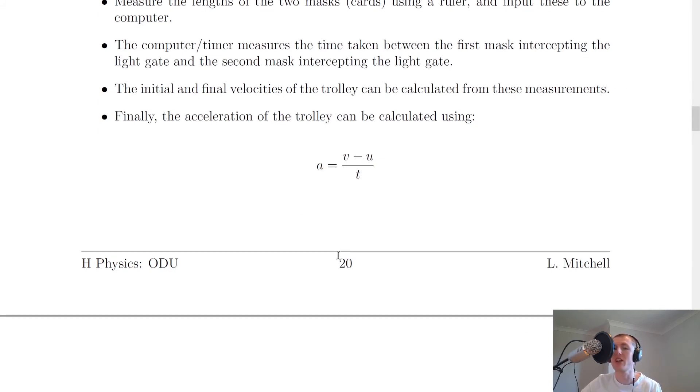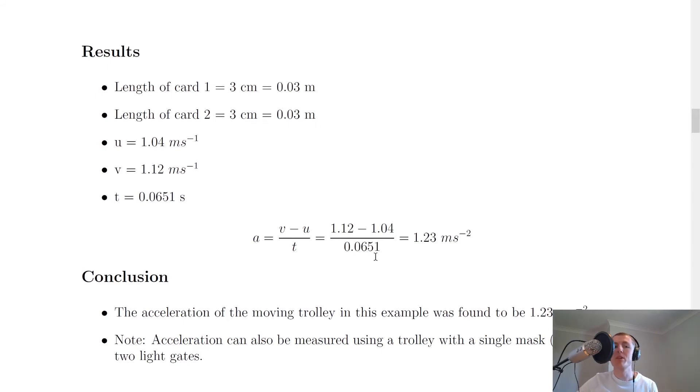So here's an example of some results that you might get. The length of the first card is 3 cm, and the length of the second card or mask is 3 cm as well. Both masks or both cards are usually going to be the same width if you're using a double mask.